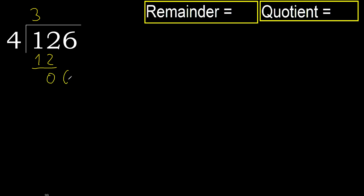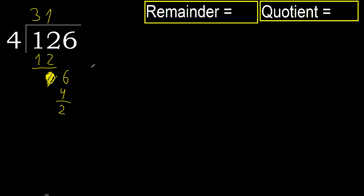Next, eliminate 0 on this side. Bring down 6. 4 multiplied by 2 is 8 — 8 is greater. Multiply by 1 is 4 — not greater. Subtract. Next, there is no number, therefore finish.